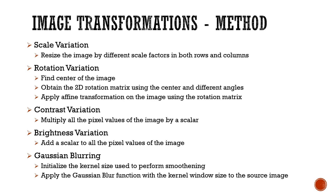Scale variation is performed by resizing the image using different scale factors in both rows and columns. To achieve rotation variation, we first find the center of the image, then obtain the 2D rotation matrix using the center and try out different angles varying at steps of 45 degrees from 0 to 360 degrees, and apply an affine transformation using this generated rotation matrix.